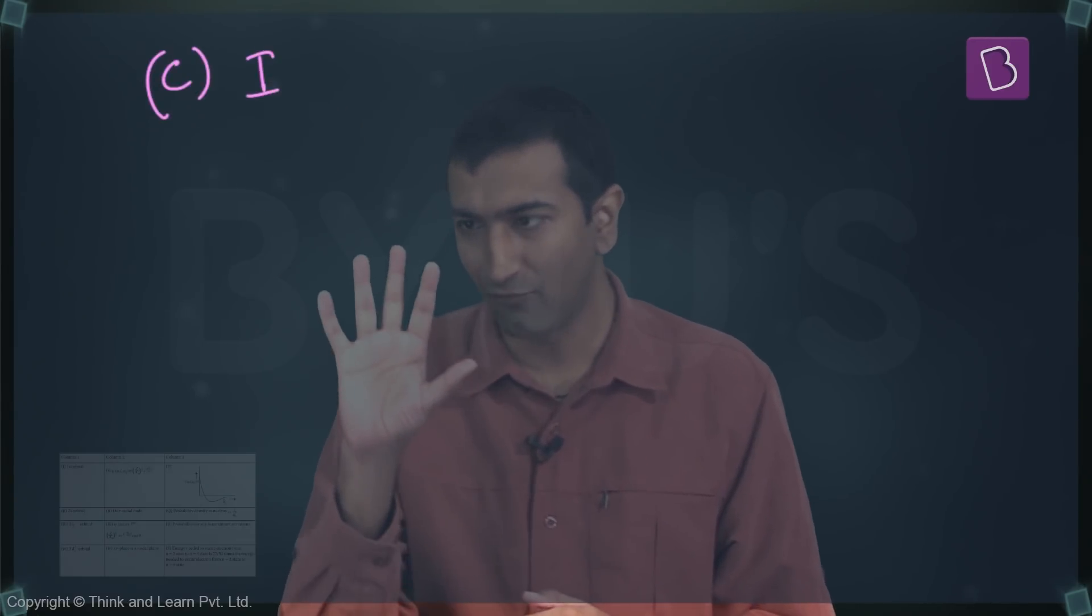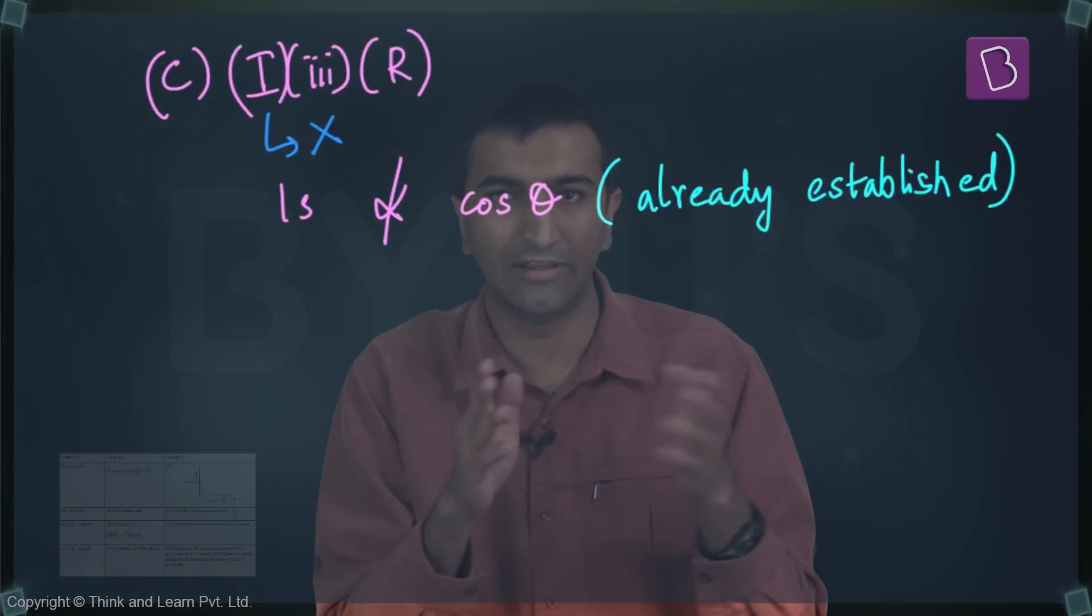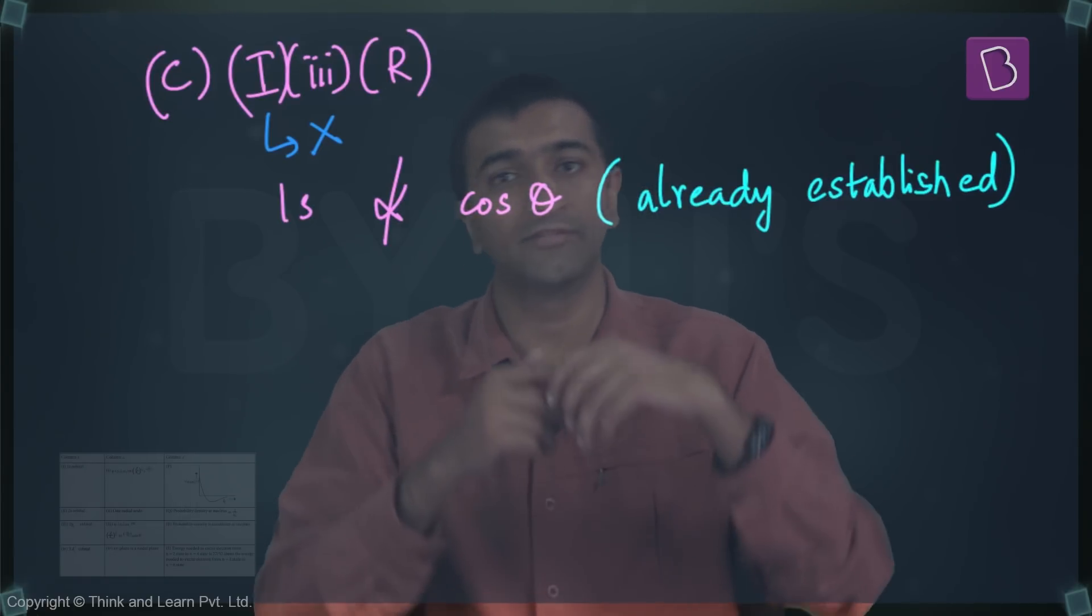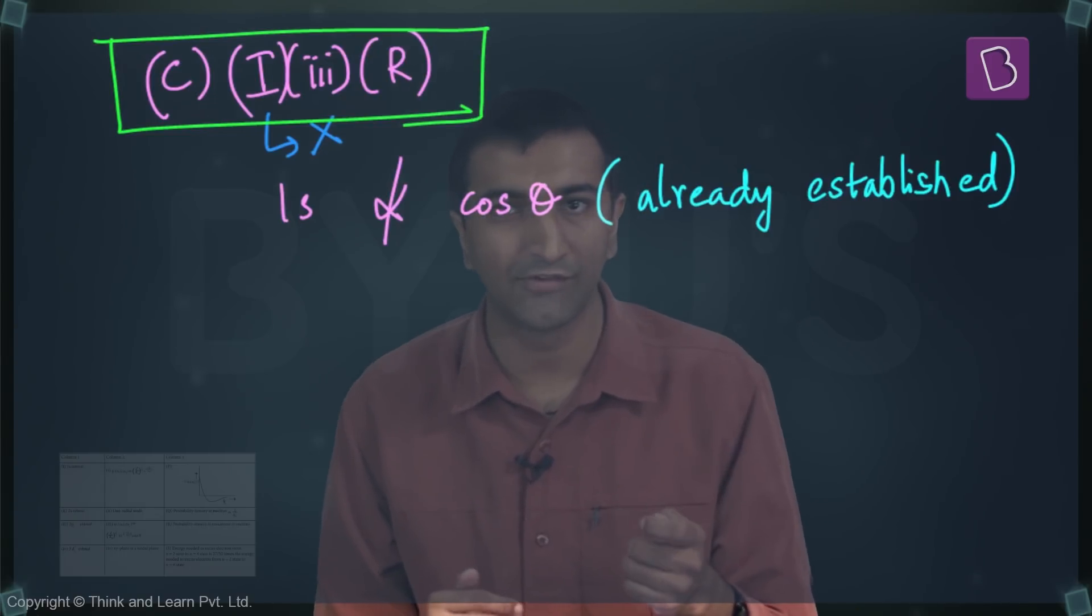Let's look at option C. I have one matching with three matching with R according to this option. Now one is a 1s orbital. This looks fishy right away because one cannot match with three, because three has some complicated equation but it has a cos θ at the end of it. You know that if it's an s orbital, the ψ function cannot be dependent on theta or phi. This option is hence done. This is incorrect and hence the answer.